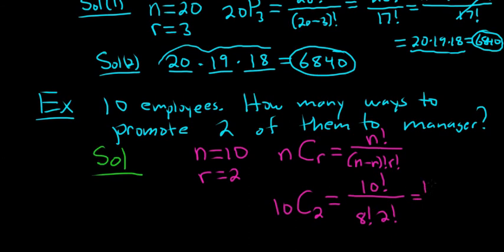10 factorial is 10 times 9. And the rest of it is 8, 7, 6, 5, 4, 3, 2, 1. That's 8 factorial. On the bottom, we still have 8 factorial and a 2 factorial. The 8 factorials cancel. 10 times 9 is 90. 2 factorial is 2. So we get 45.